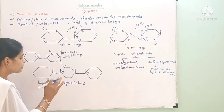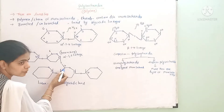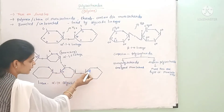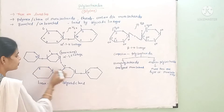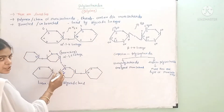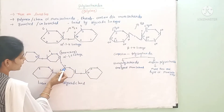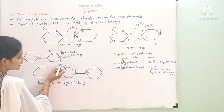In some cases, there is a 6th carbon involved. There is a branch at the 6th carbon.